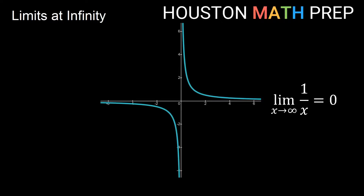Let's take a look at the other end — the end behavior on the left side of the graph. That's actually going to be the limit as x approaches negative infinity, as our x value gets more and more negative. As we continue left on our graph, you'll see that we're approaching the horizontal axis as well, but from below the axis. We're still approaching a y value of 0, so the limit as x approaches negative infinity of 1 over x is also 0.